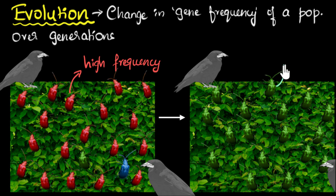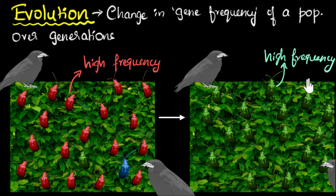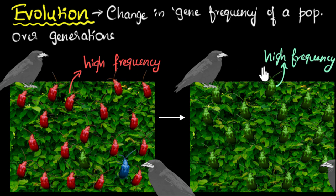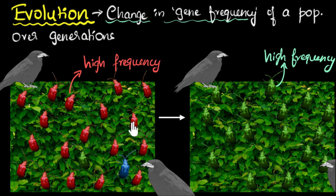So now the green colored genes have a higher frequency in this population. The red colors are gone — they've become ancient, you don't even see them anymore. Only green color will be passed on. This means there has been a change in the gene frequency of the population of our beetles over generations. Earlier it was red, now it has become green — that's what we mean by change in gene frequency.